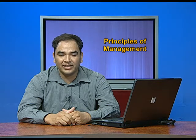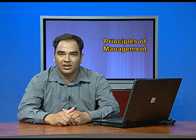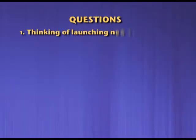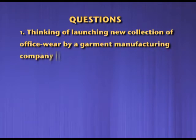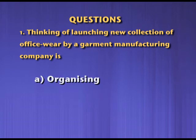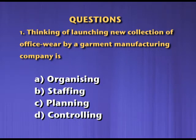But before starting the new chapter, let me tell you the correct answer of the questions from our last episode. Question number one: thinking of launching a new collection of office wear by a garment manufacturing company is — A. Organizing, B. Staffing, C. Planning, D. Controlling. And the correct answer is C, Planning.